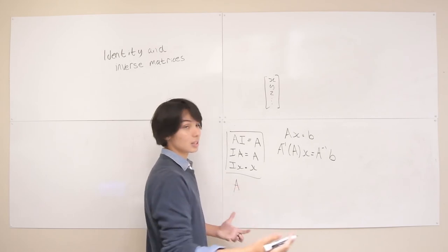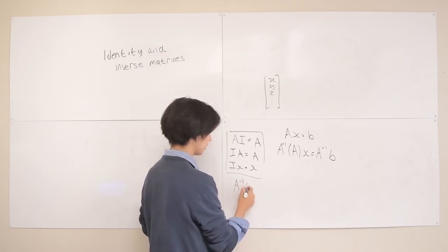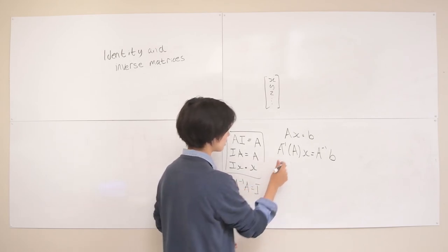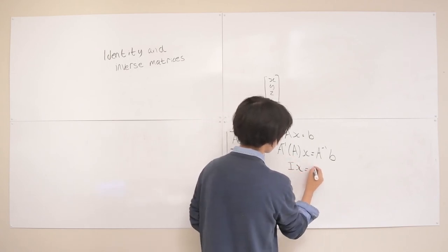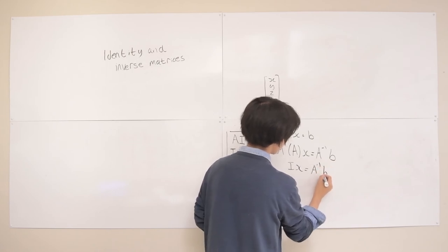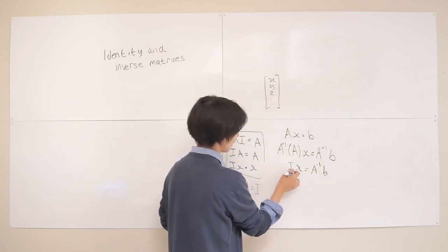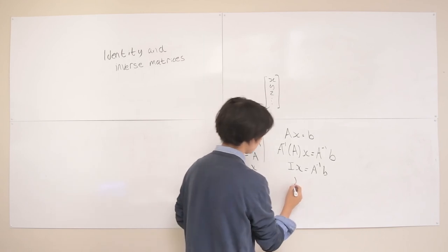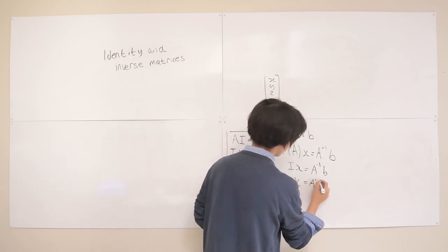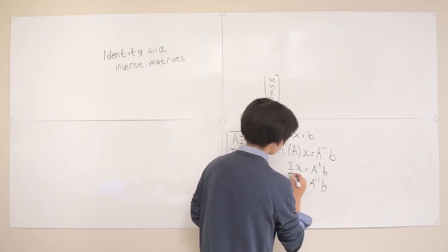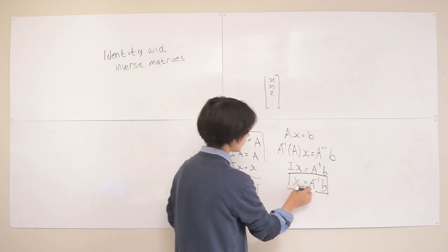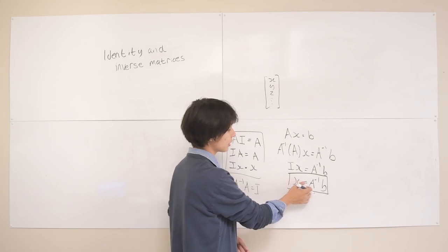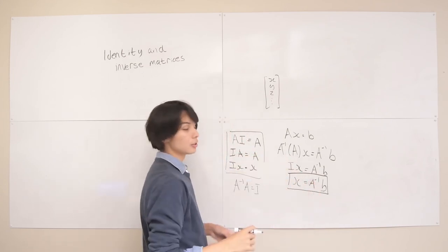And A inverse A, as we know, by basically the definition of an inverse matrix, is going to equal I, so this is going to be the identity. So that's going to be the identity times X equals A inverse B. And of course, IX, identity times this vector, is just going to be X. So we can immediately solve for our variables, our variable vector, by taking the inverse of our coefficients matrix and multiplying it by our answers matrix.